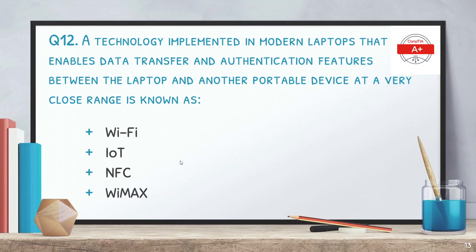Question number 12: a technology implemented in modern laptops that enables data transfer and authentication features between a laptop and another portable device at a very close range is known as? The options are Wi-Fi, IoT (Internet of Things), NFC, and WiMAX. The answer is again NFC, or Near Field Communication, because the question specifies devices must be at a very close range, unlike Wi-Fi, WiMAX, and IoT which operate at larger distances.